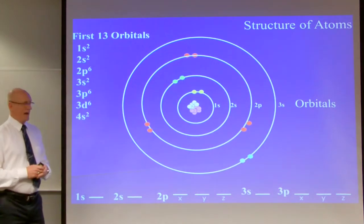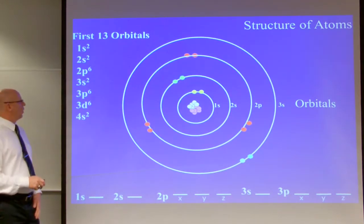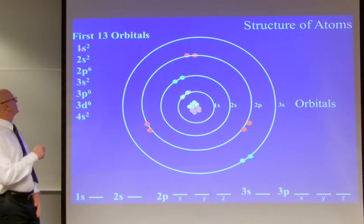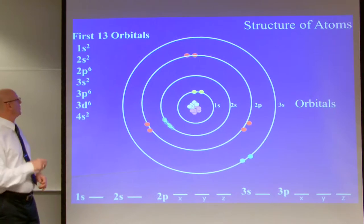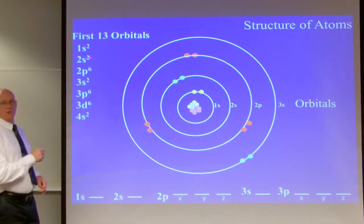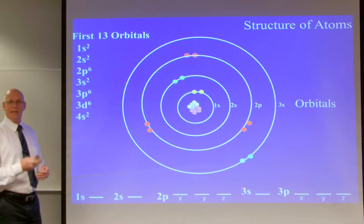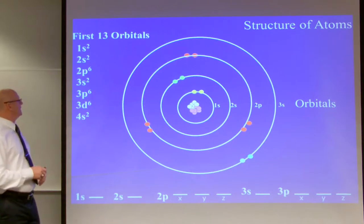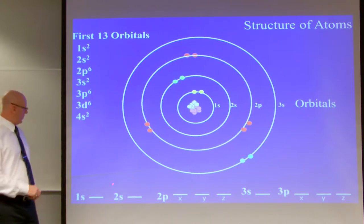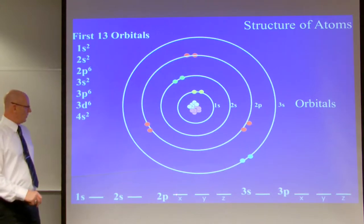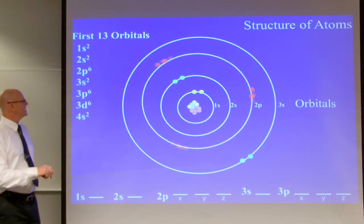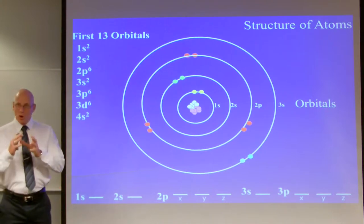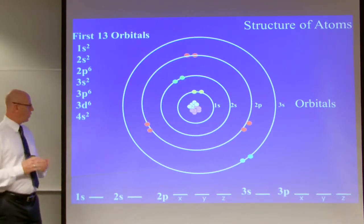Starting with the orbitals in an atom: the first orbital is the 1s orbital. The next orbital going out is the 2s orbital. The superscripts on top indicate the number of electrons in those orbitals. The next orbital is the 2p orbital. The p orbital has x, y, z components and can hold two, four, or six electrons — so that p orbital has six electrons total, with three orbitals within it.